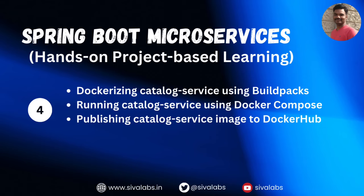We have completed the implementation of catalog service APIs. In this video we are going to focus on dockerizing the catalog service and configure Docker Compose files so that we will be able to run the entire catalog service — both the service and its dependencies like Postgres — using Docker Compose. Then through GitHub Actions we are going to build a Docker image and publish it to Docker Hub.